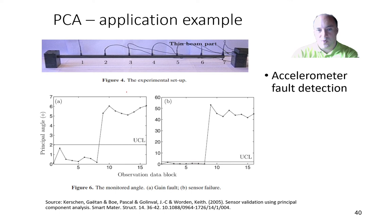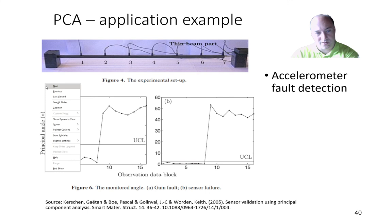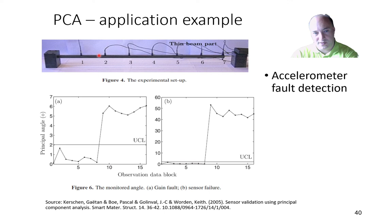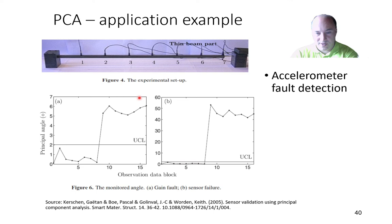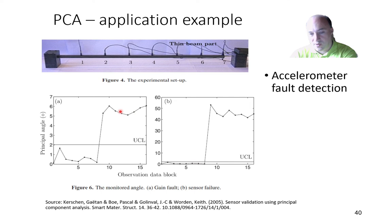The third example is a beam with seven acceleration sensors at different positions. From the physical arrangement, we know the accelerations must be correlated — if one point moves upward, an adjacent one must move upward as well. Using PCA analysis, we can detect if there is a sensor fault. A correct signal stays below the threshold, and after introducing an error, the evaluated criterion jumps above the threshold, indicating a problem with the signal.